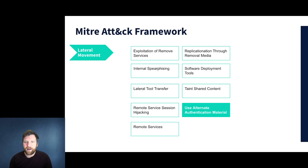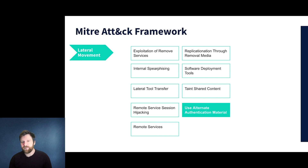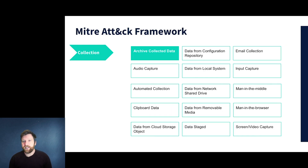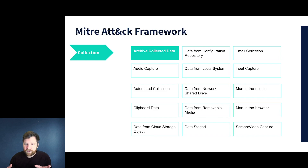Lateral movement played a big part in this exploit, but again didn't require sophisticated techniques like hijacking or internal phishing. They were able to use alternative authentication material — the GitHub credentials found from one repository — to move to others. For data collection, they archived data from information repositories and were able to gain access to the root repository, giving them a trove of personal and sensitive information without needing man-in-the-middle attacks.